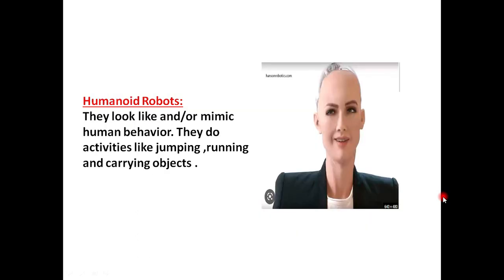The second one is a humanoid robot. It's a picture of Sophia as you know, it's a Russian robot and the most famous robot. She is here to compete with a human being. They look like and mimic human behavior. They do activities like jumping, running, and carrying objects. Mimic hota hai copying the things. Yeh insani raviyo ko, behaviors ko mimic kar sakte hain.